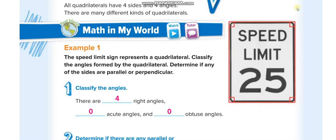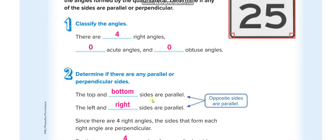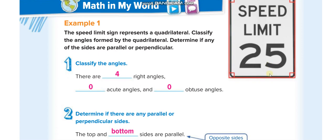Here they are talking about this speed limit sign. There are four right angles — a right angle means equal to 90 degrees. An acute angle is less than 90 degrees, and there is no acute angle in this figure.